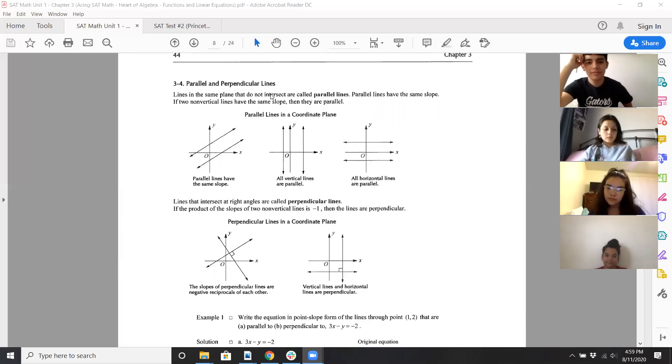So, for example, if that slope's one-half, then that slope is, of course, negative two.